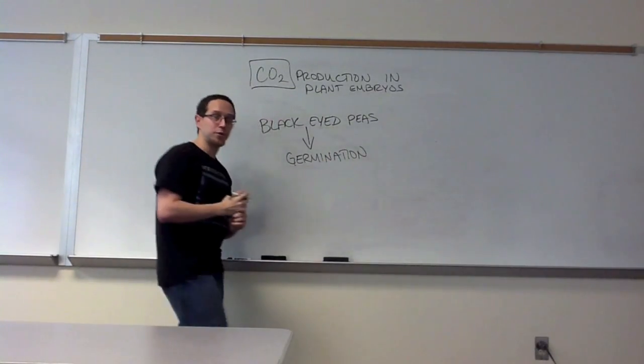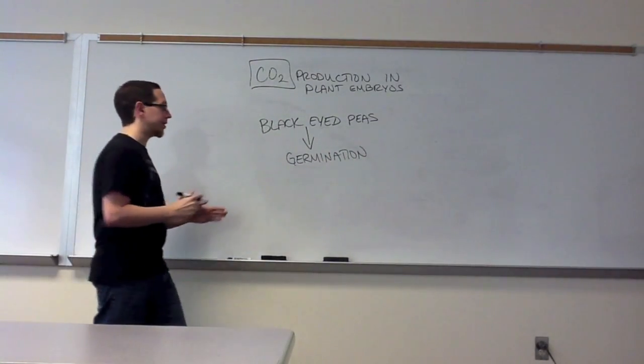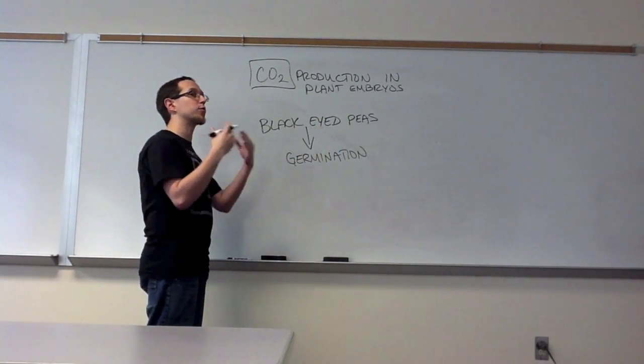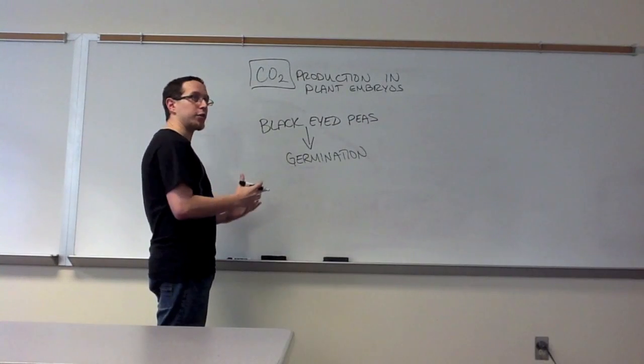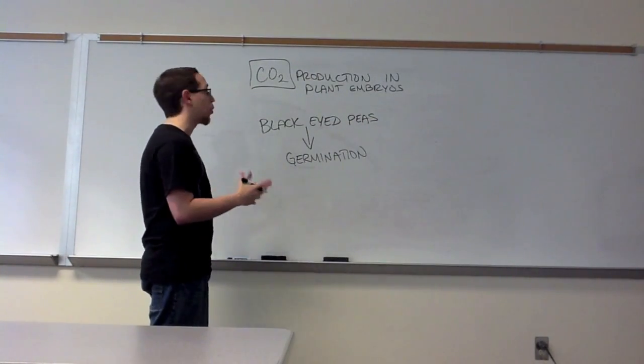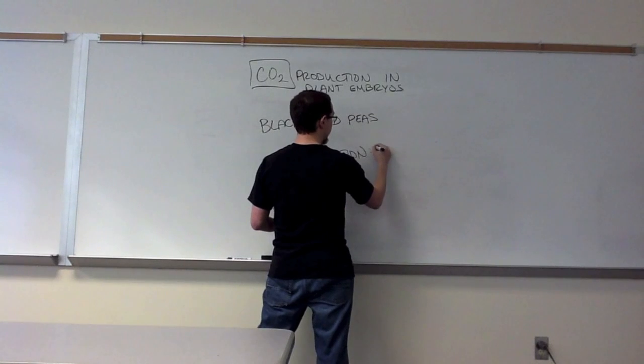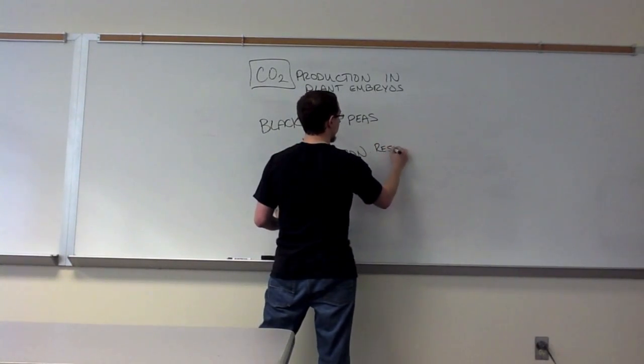Germination, as your lab manual states it, is a period of growth after a period of dormancy. So now these peas are growing. They've been surrounded with water and they're ready to grow. Part of growth requires energy. So while these plants are germinating, they're going to be performing cellular respiration.